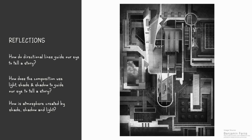In this composition by Benjamin Ferns, we have already discussed how the composition breaks the rules. How does it use directional lines, shade, and shadow to guide the eye, tell a story, and create atmosphere? Pause to give yourself time to reflect on the answer, and then begin the video once again to bring our talk to a conclusion.